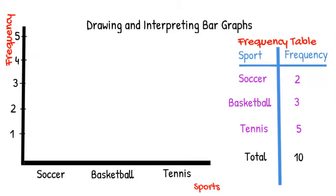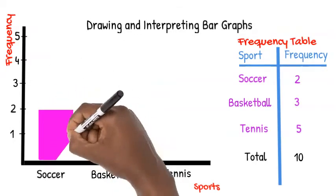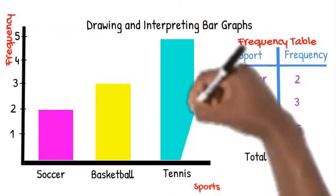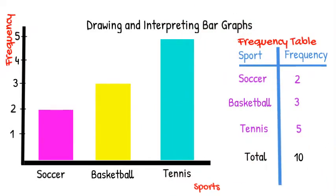Now that our axes are both done, we look at our frequency table to see how high each bar should go. Since 2 girls play soccer, the bar goes up to 2. Since 3 girls play basketball, the bar goes up to 3. And since 5 girls play tennis, the bar goes up to 5. If we add the height of each bar, we get the total count of the sample.